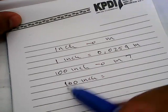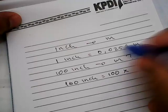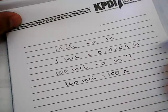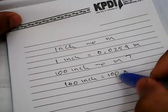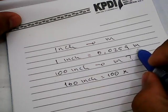Then you need to write this 100. You need to multiply the 100 with this number. Why should we multiply this 100 with this number? It's because we want to convert inch into meter.